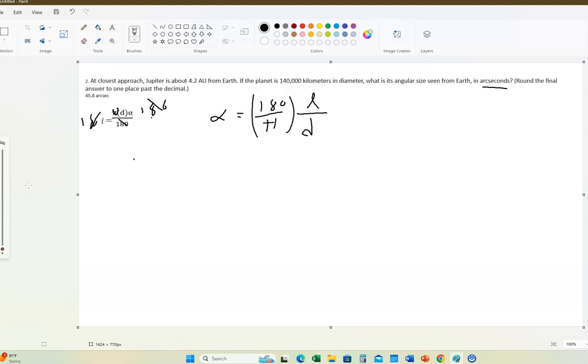Alpha will equal 180 divided by pi times L over D. The 180 over pi is just a number. Remember L is the actual size, or the script L, and script L and D have to be in the same units. These must be in the same units.